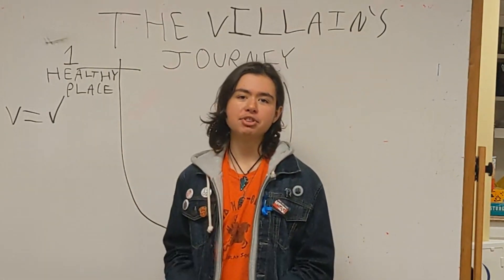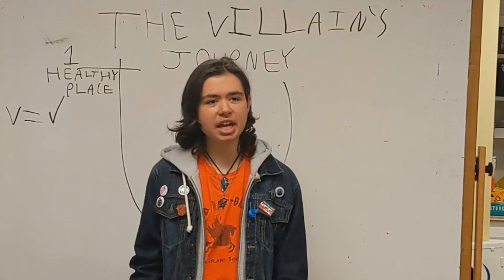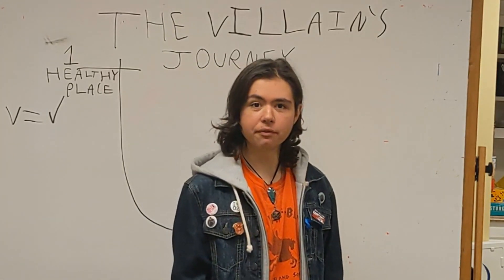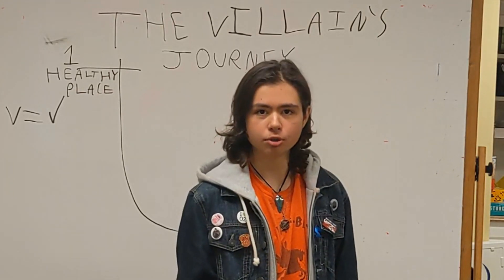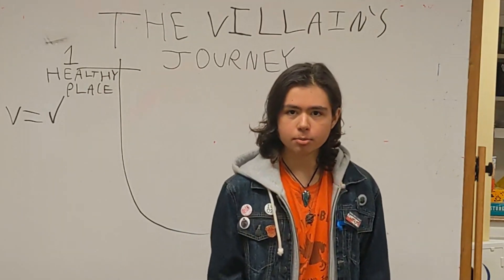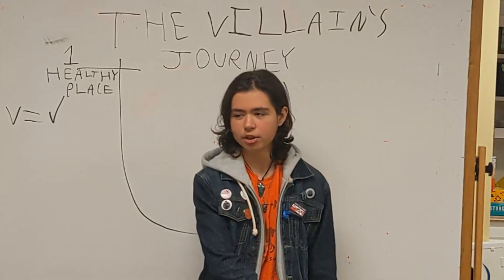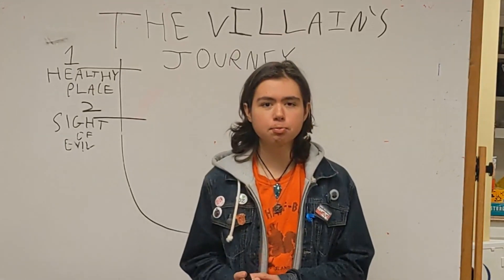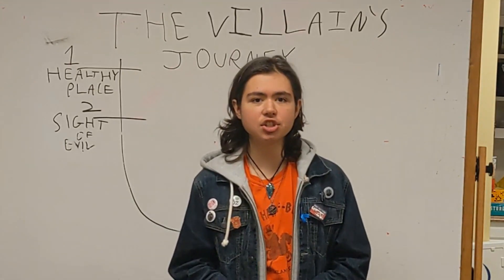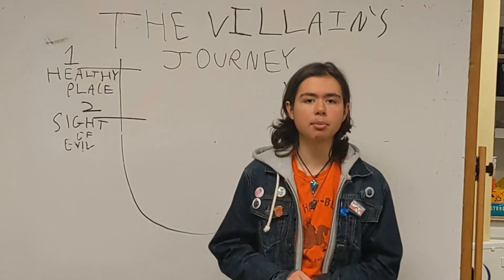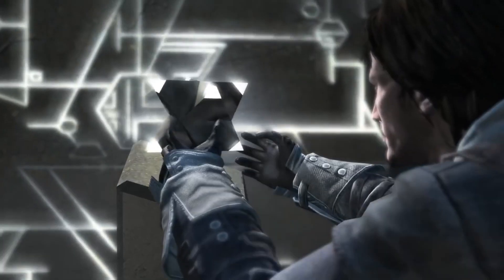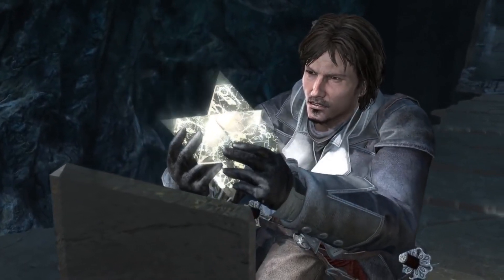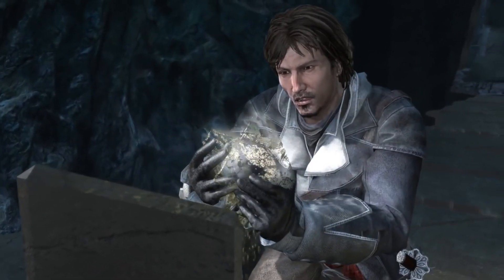But that will soon change, as they are broken by this awful, awful world. Beginning with Two: Sight of Evil. At this point in the story, the villain sees that there's a problem with their corrupt world. This is when Shay causes the Lisbon Earthquake, trying to activate a Precursor Artifact.